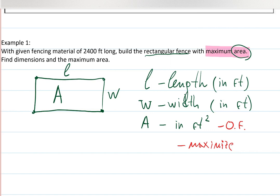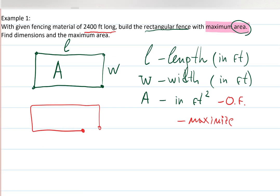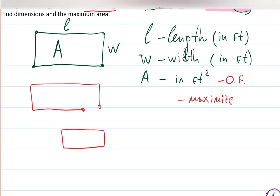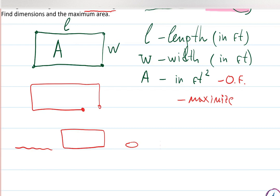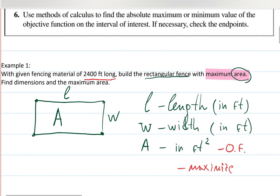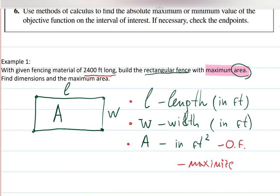I'm stuck with 2400 feet of material and I want to enclose a fence using all of it. I don't want a gap because I didn't have enough material, and I don't want leftover material either. I also don't want a weird shape that can't hold much — for example, if I'm a farmer with sheep, I don't want a fence that only fits one sheep in a line.